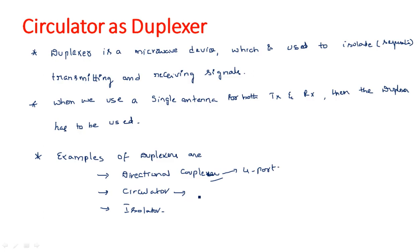Now let us see what is a circulator. Circulators are generally available in three or four ports. The number of ports might also be increased depending on the application. In the laboratory, you might have seen a circulator and done microwave experiments on it. Three port circulators are most common and four port circulators also exist.